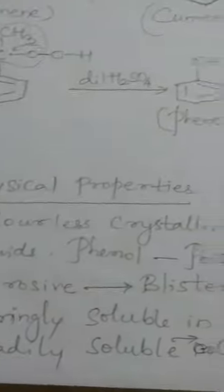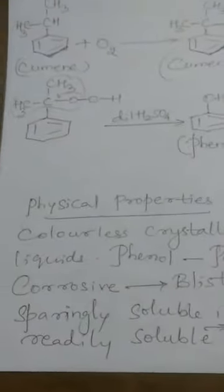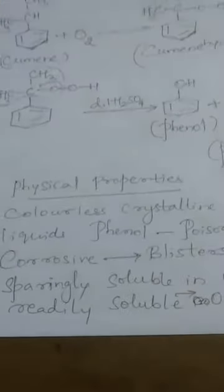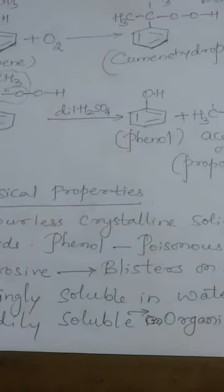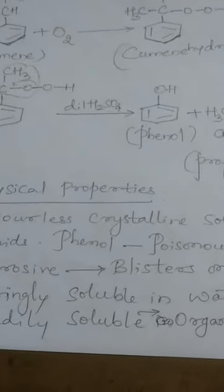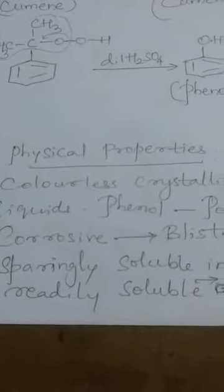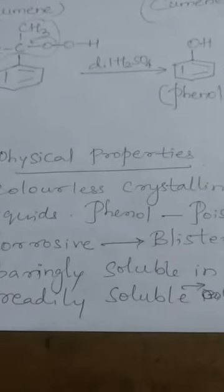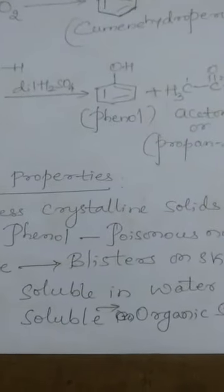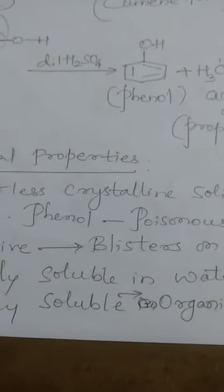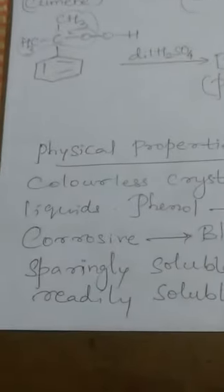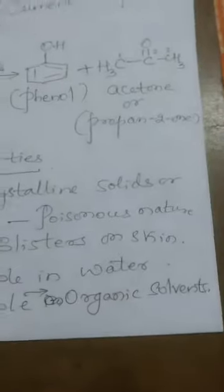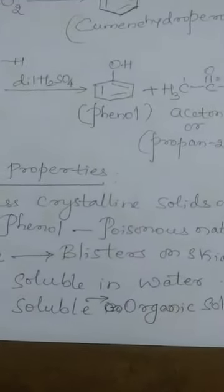Coming to the physical properties — just for your information, you should know 1 or 2 physical properties. Phenols are either colorless crystalline solids or liquids. Phenols are poisonous in nature; in particular, the first member phenol is poisonous. One more very important characteristic property is that they are corrosive — if phenol falls on skin, it produces blisters or bubbles, so be very careful when handling it. Regarding solubility, phenols are sparingly soluble in water — they are partially soluble in water — whereas they are readily soluble in organic solvents.